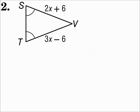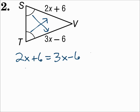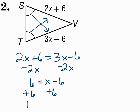Number two: in this triangle we have two congruent angles. Remember, if two angles are congruent, then the sides opposite those angles are also congruent. So those two sides are the same — make their measures equal each other: 2x plus 6 equals 3x minus 6. Subtract 2x from each side: 6 equals x minus 6. Add 6 to each side, and x is 12.